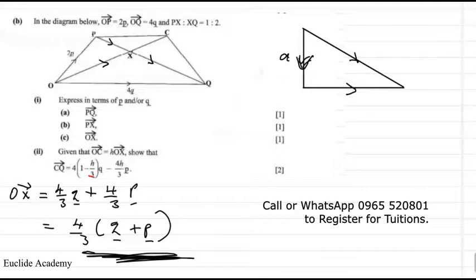And here we have, so first of all we ask ourselves, how do we find CQ? So CQ will be CQ. So CQ is this one here. So CQ will be, let's see, we have to, how do we get CQ?